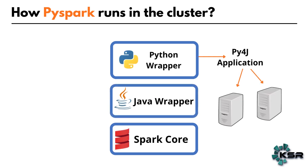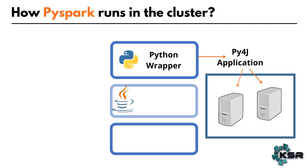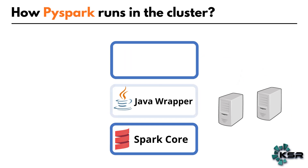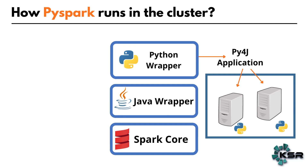If you are submitting a PySpark application, the AM container has the main method and it distributes the tasks to the available worker nodes. If the job is using normal PySpark applications — because we already have the Java wrapper and Python wrapper that understand Python code — it will successfully execute Python-related code. However, if the code uses any Python-specific libraries or Python UDFs (user-defined functions), then separate Python workers will be created on each of the executors.